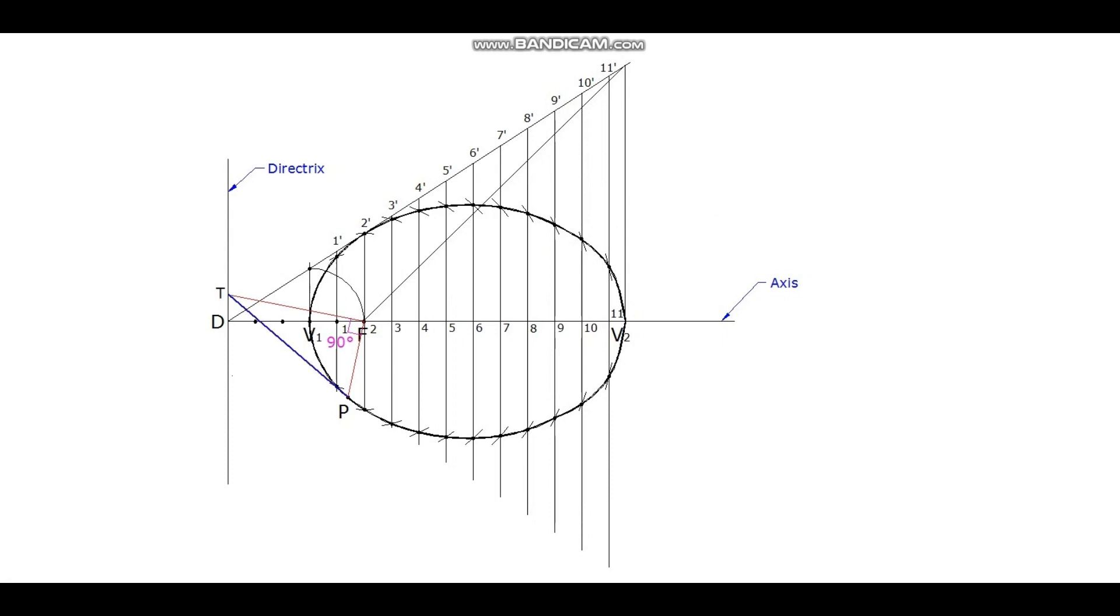Join point T with point P and extend it and mark the end point as G. This line TG is the tangent. Now draw a line perpendicular to this tangent through point P.